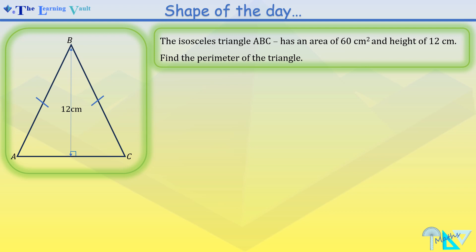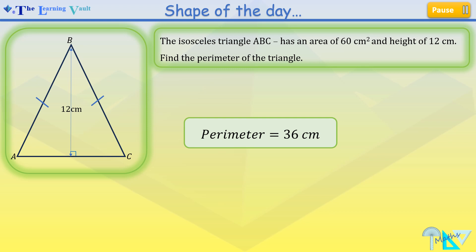You're meant to find the perimeter of the triangle. You may pause and have a go. And the answer is 36 centimetres.